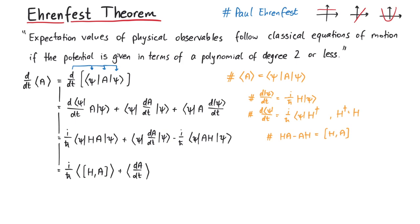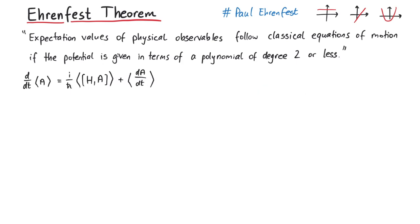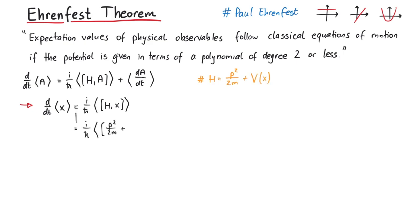Let us now apply this result to the position operator x. The position operator itself is not explicitly time-dependent, so only the commutator term remains. In order to evaluate this commutator, we note that the commutator of x with any function of x will vanish, so we can immediately remove the potential from this commutator.